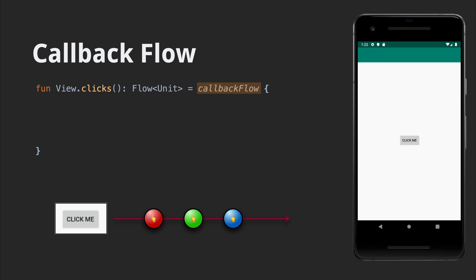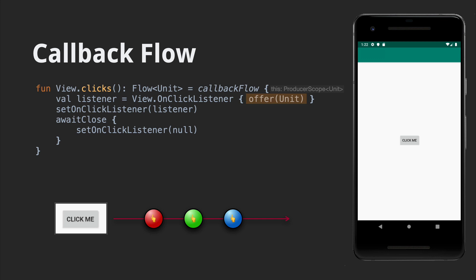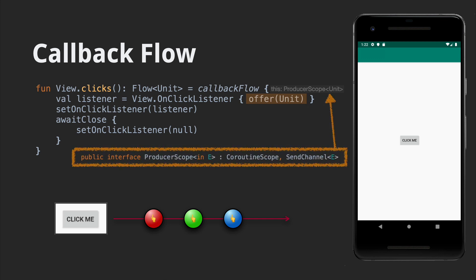Luckily, we get to rely on Kotlin libraries to handle the nitty-gritty here. We can use the callbackflow builder function. callbackflow provides us with a producer scope. From within this block, we'll be able to first create a view OnClickListener and assign it to our parent view. We have access to producer scope thanks to callbackflow, but as an extension function, we also have access to our parent view code. Note the call to offer here — each time the user clicks the view, we call offer with unit. The offer function is provided by the producer scope.